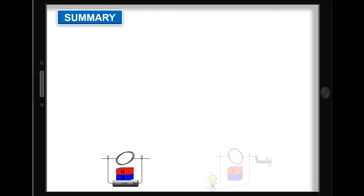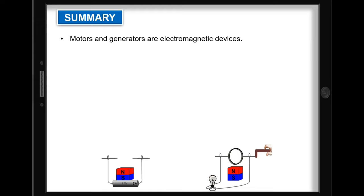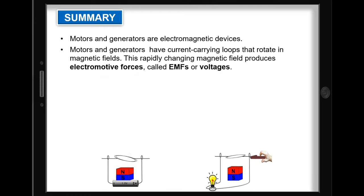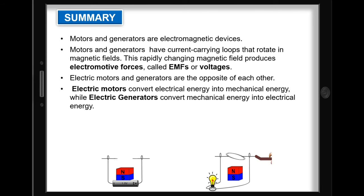To summarize what you have learned: Motors and generators are electromagnetic devices. Motors and generators have current-carrying loops that rotate in magnetic fields. This rapidly changing magnetic field produces electromotive forces called EMFs or voltages. Electric motors and generators are the opposite of each other. Electric motors convert electrical energy into mechanical energy, while electric generators convert mechanical energy into electrical energy.